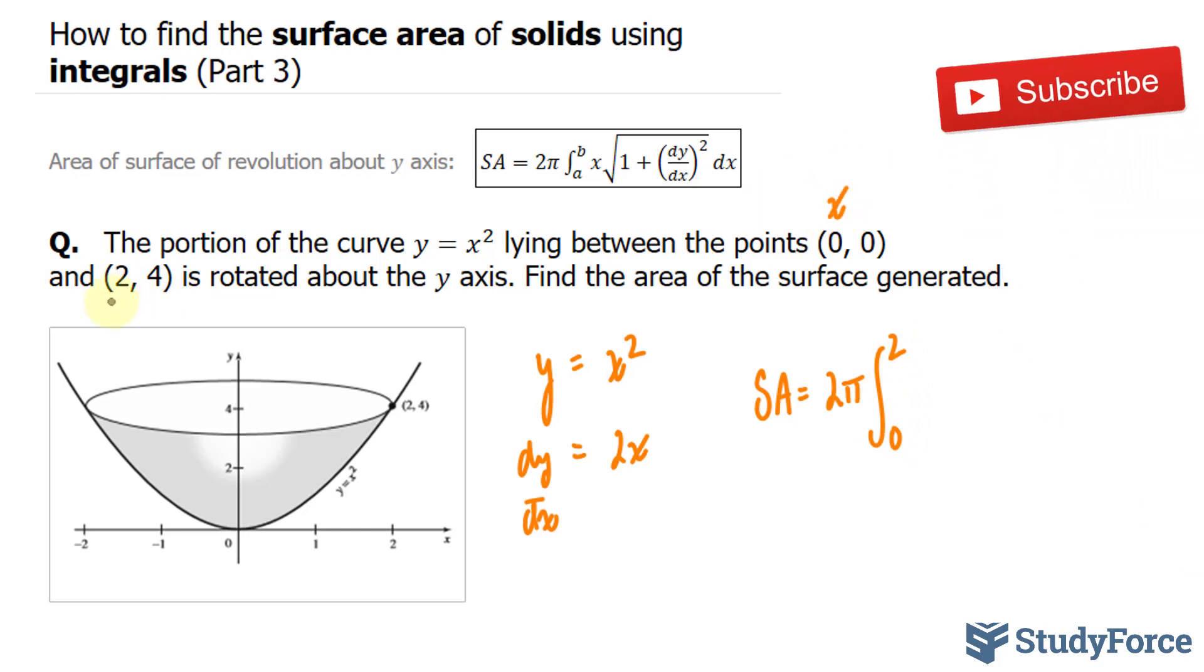this x and this x, of the integral x times the square root of 1 plus 2x being squared. So we have 4x squared dx.